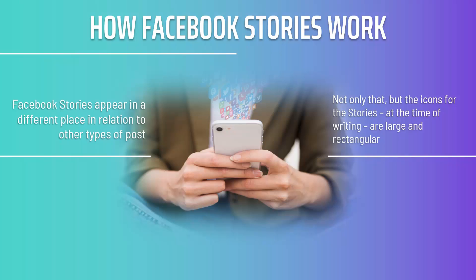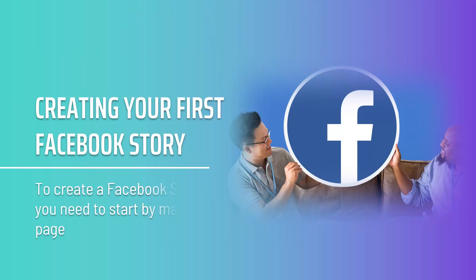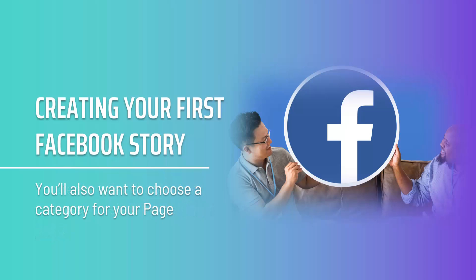To use Facebook stories there are a few steps to follow. First, you'll need to create a Facebook page — unlike Instagram, on Facebook you need a page to post stories, and you'll need to be an administrator on that page. Facebook stories can also be accessed from Facebook Messenger, where they are displayed as a row at the top of the inbox. Like Instagram, Facebook stories are available for 24 hours after being posted. To create your first Facebook story, start by making a page, giving it a name (ideally your business name), providing details like postal address and phone number, and choosing a category that roughly describes the type of business you run.